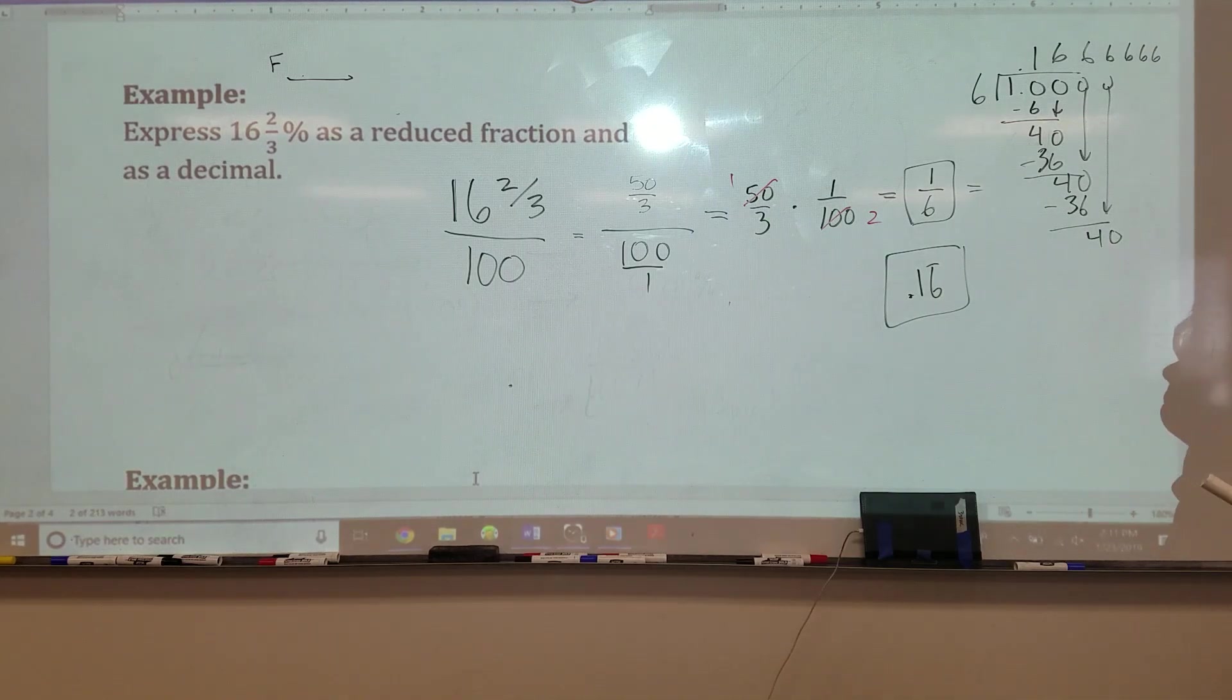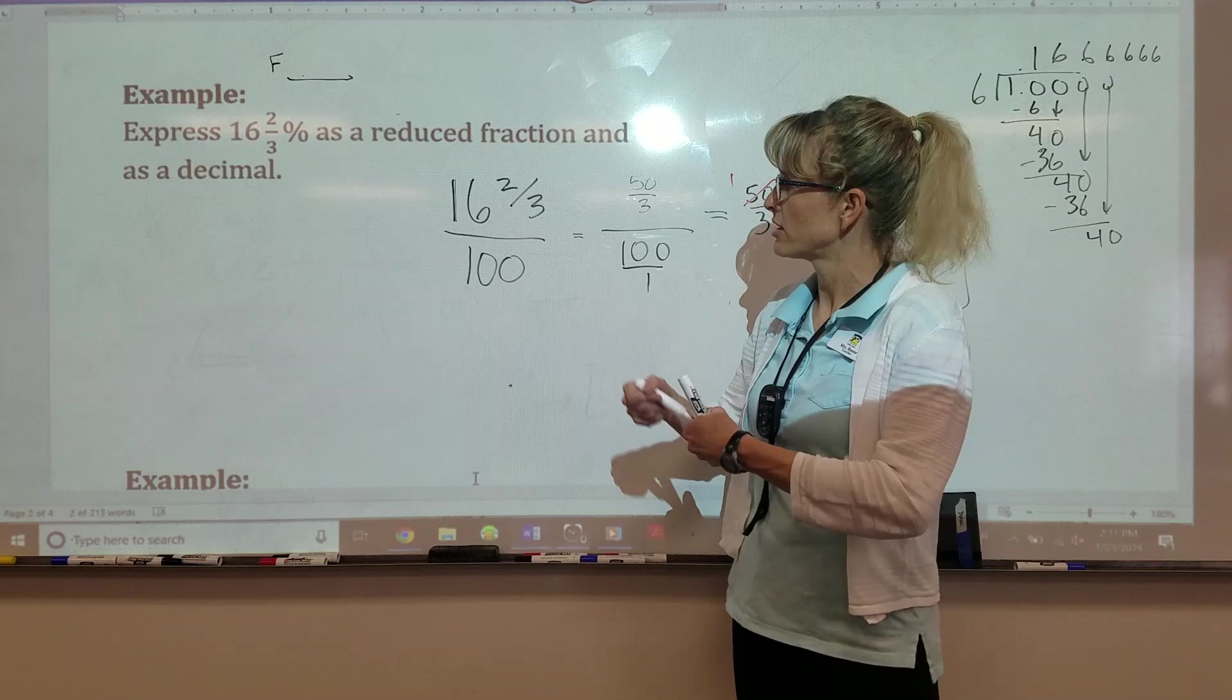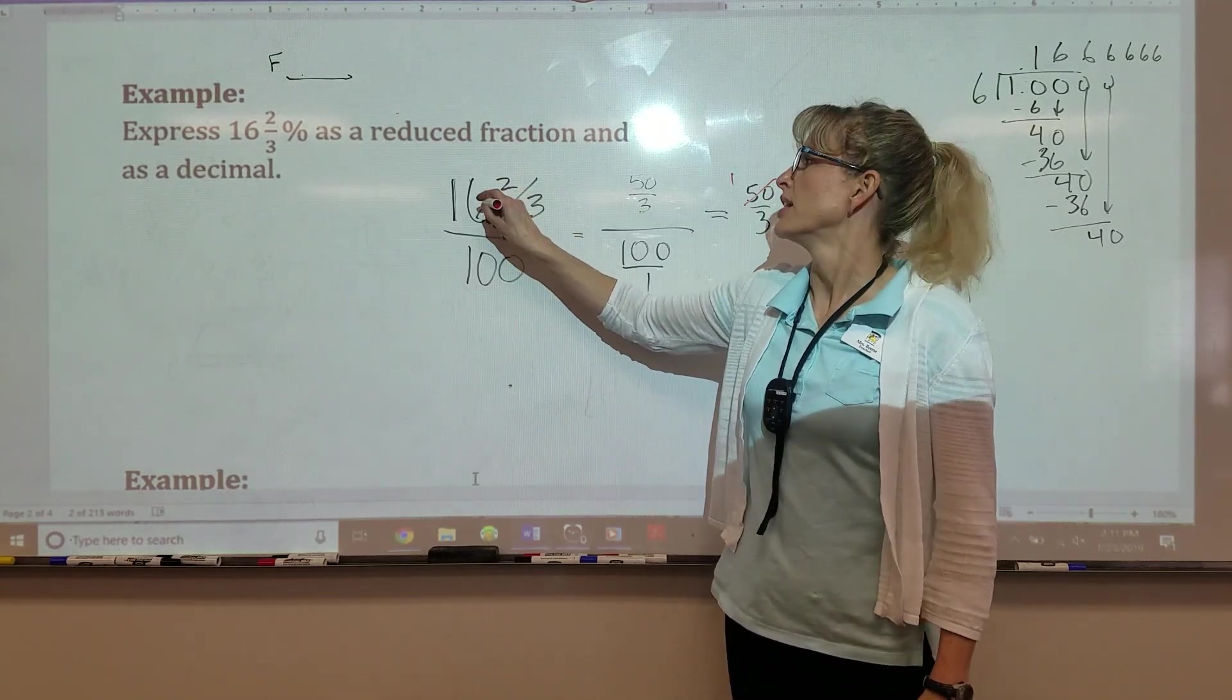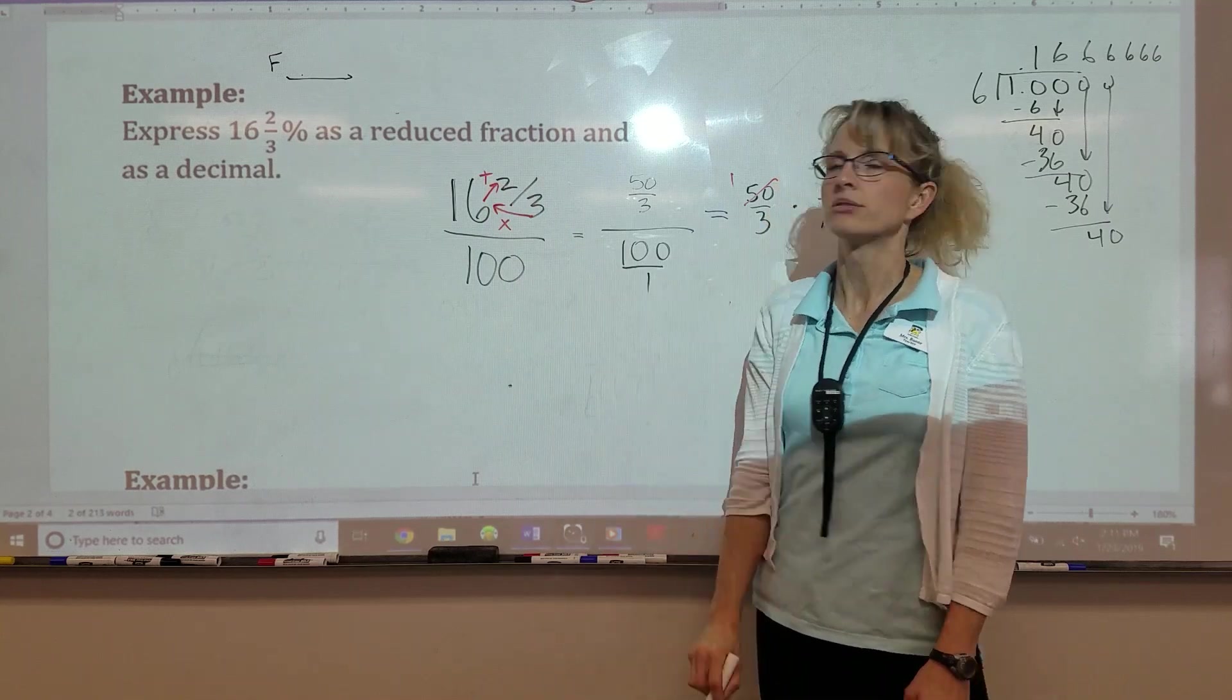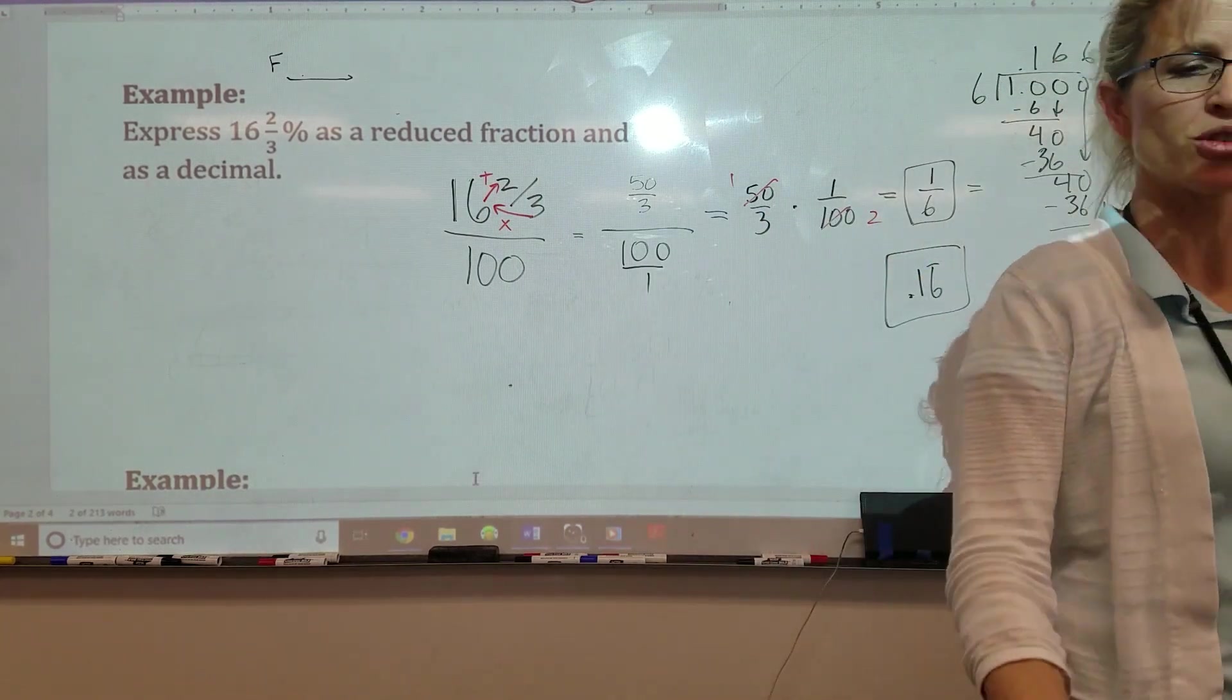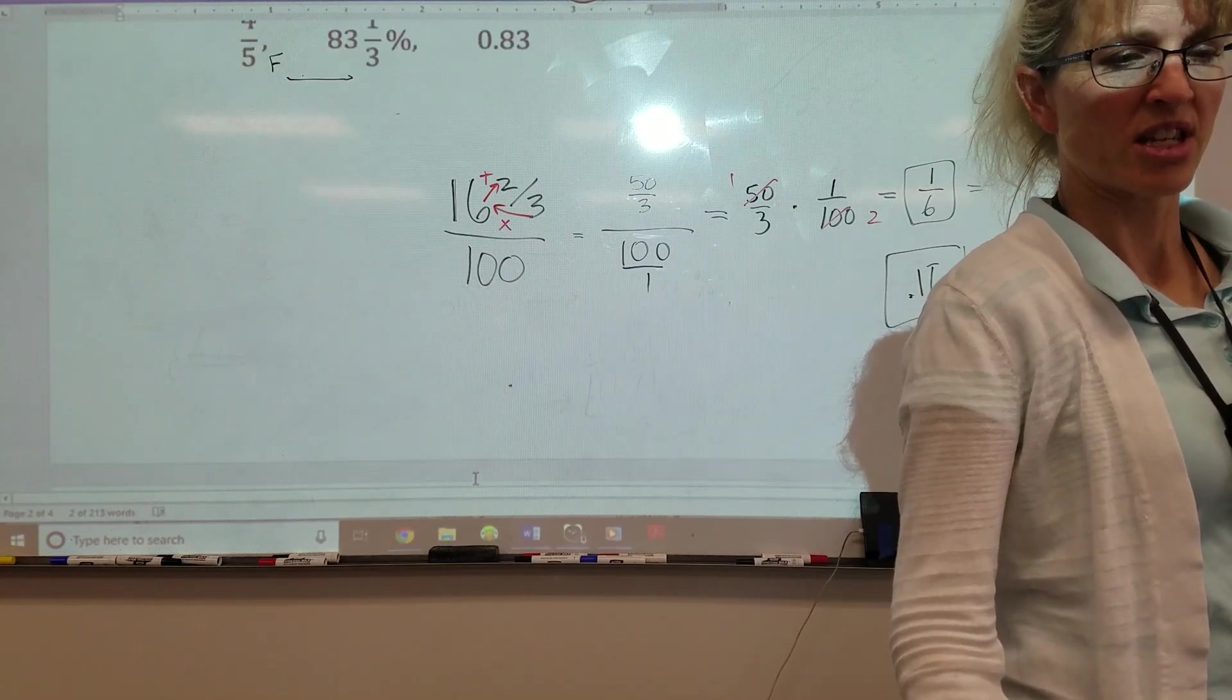What did you need to find the 2 over 3? Great question. I took 3 and I multiplied it by the 16. And then I added that to the 2. Yeah. Remember that we haven't done it for a couple months, but we turned that mixed number into an improper.